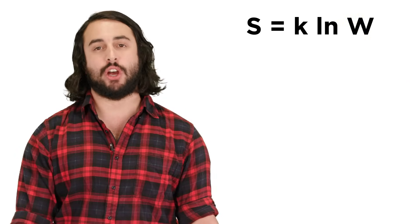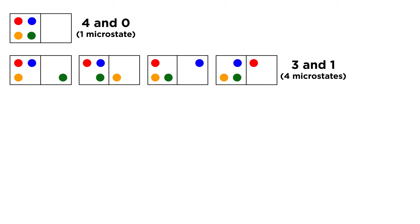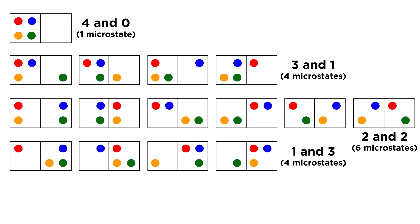This is best understood with an example. Say there are four balls to be distributed amongst two boxes. We could have all four in one, three in one and one in the other, two and two, one and three, or all four in the second box.